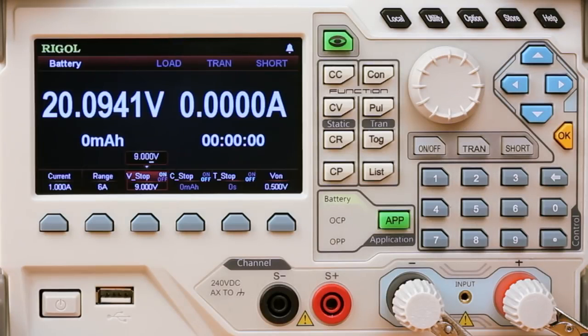You can also set capacity limits in milliamp hours or a time stop as well. The voltage on is an important one to remember. You want that to be lower than your normal battery voltage because the test will not start until it sees voltage above that.